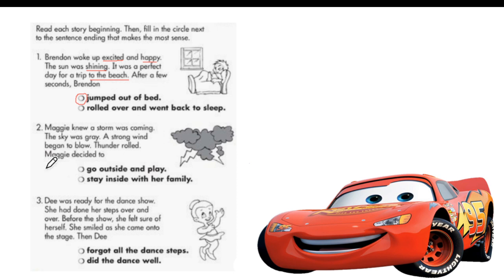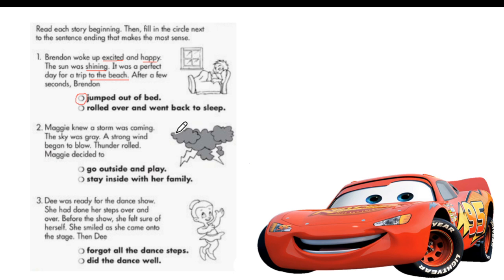Let's go to number two. Maggie knew a storm was coming. The sky was gray. A strong wind began to blow. Thunder rolled. Did Maggie decide to go outside and play or stay inside with her family? From the story you know the storm is coming. From real life, when there is a storm, you stay inside. Of course, you will stay inside. That is the correct conclusion.